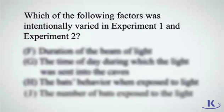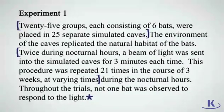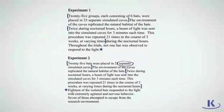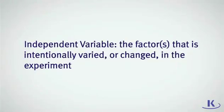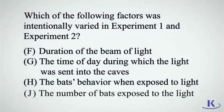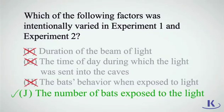Now let's try another one. Which of the following factors was intentionally varied in experiment one and experiment two? To answer this question, you need to revisit the lines you placed a bracket around in each experiment, describing the method used in each. The only difference was whether the bats were isolated or in groups when exposed to light. The answer choice that matches this is J: the number of bats exposed to light.